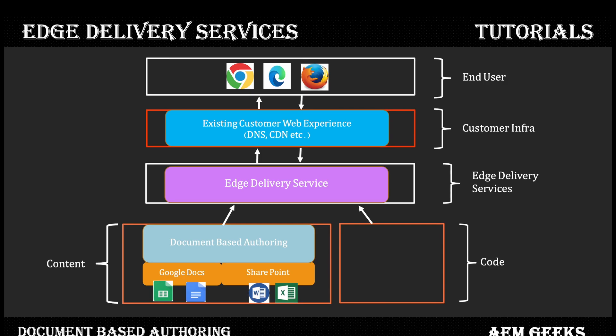For code: since we don't have AEM and there is no build process, all code and configuration stays in your GitHub repository. This code and content is then moved into Edge Delivery Services — into the content bus or code bus — and the pipelines are responsible for converting the documents and code into final HTML.